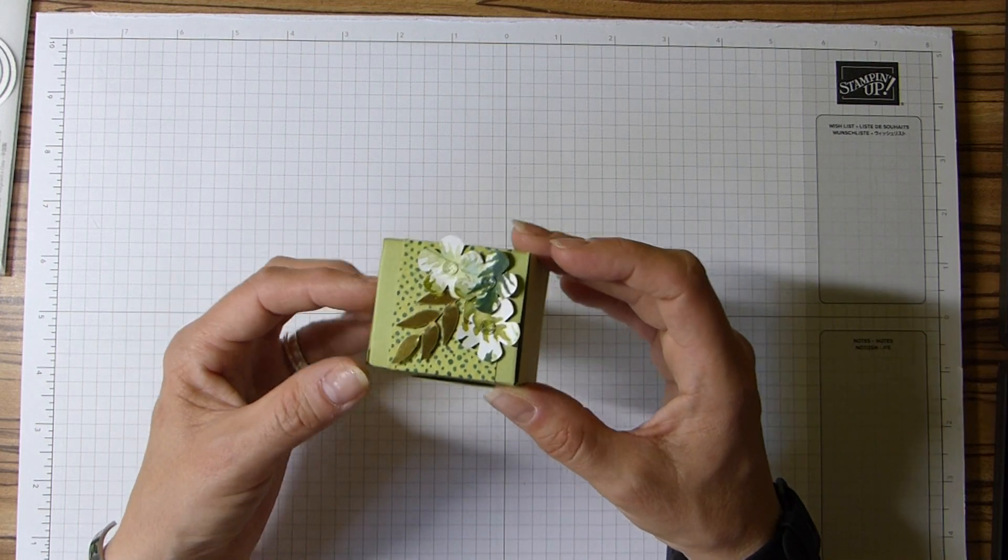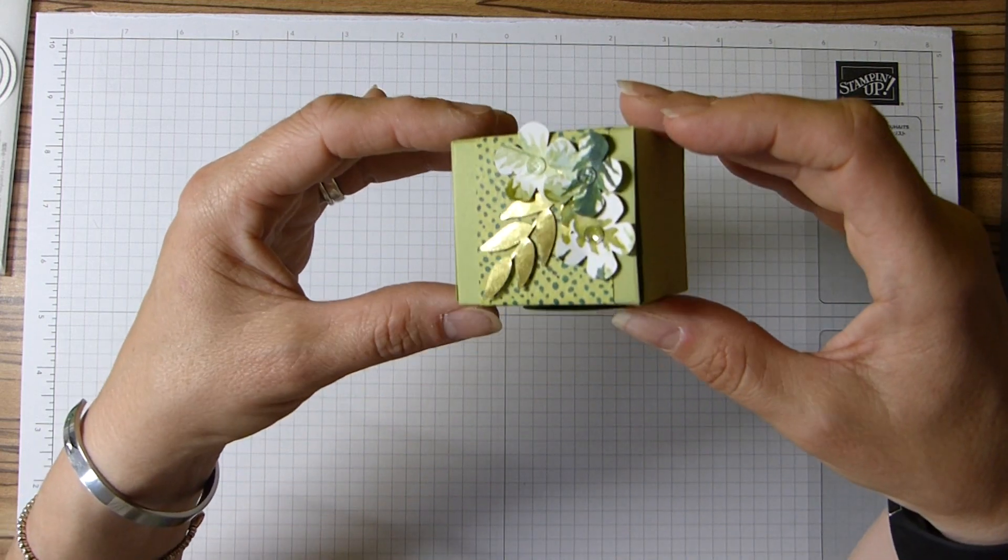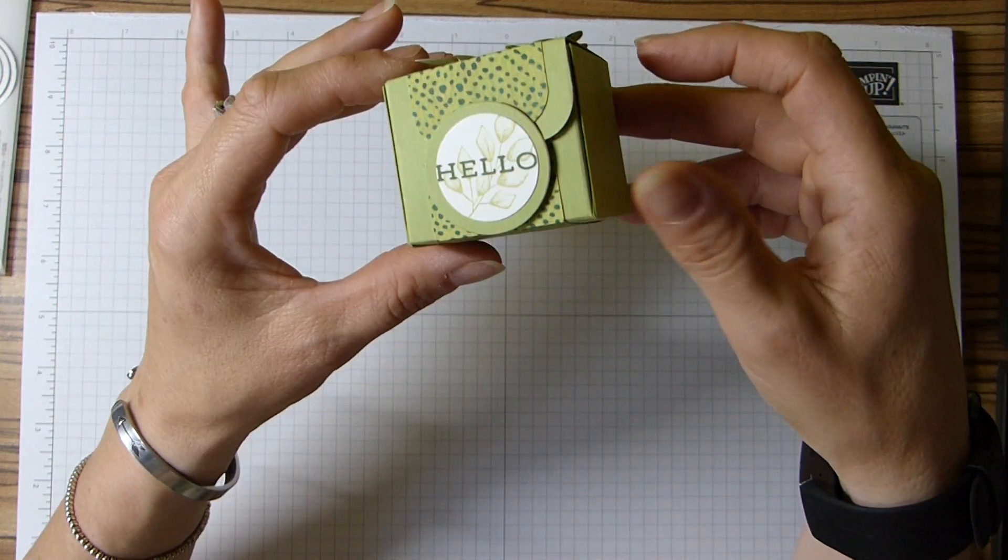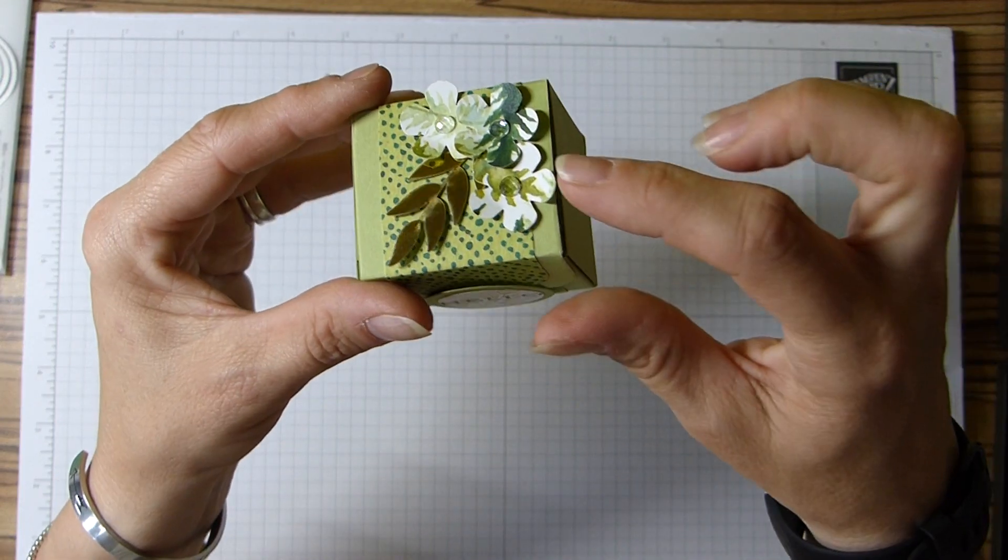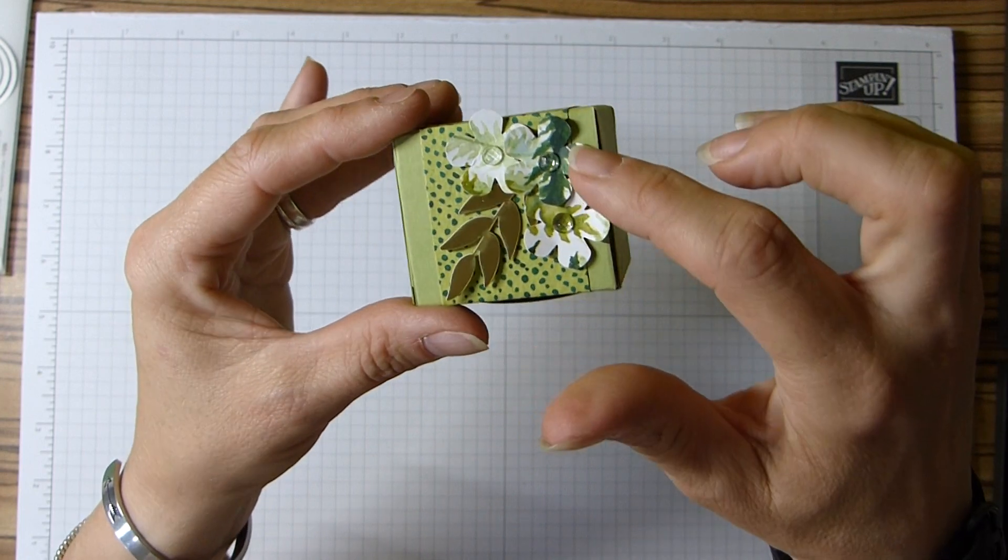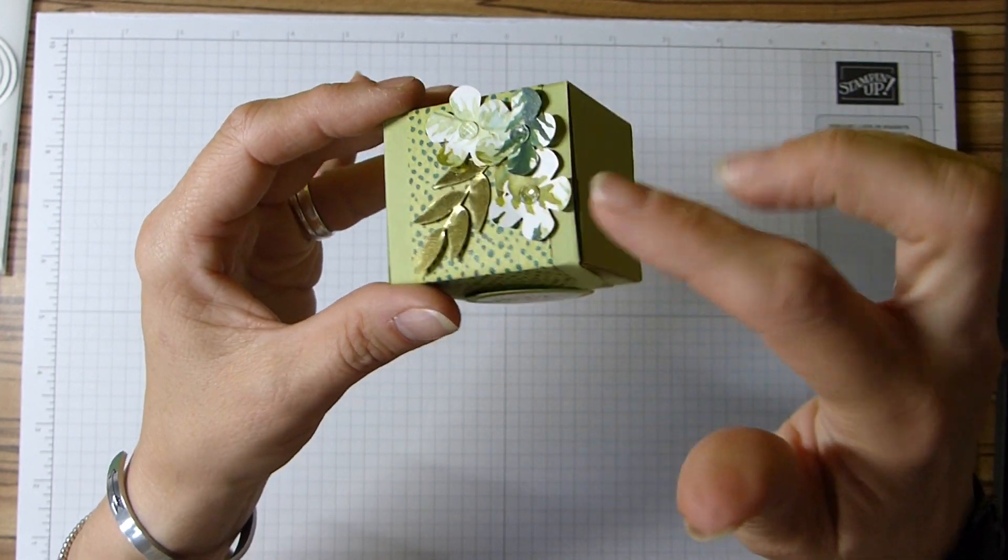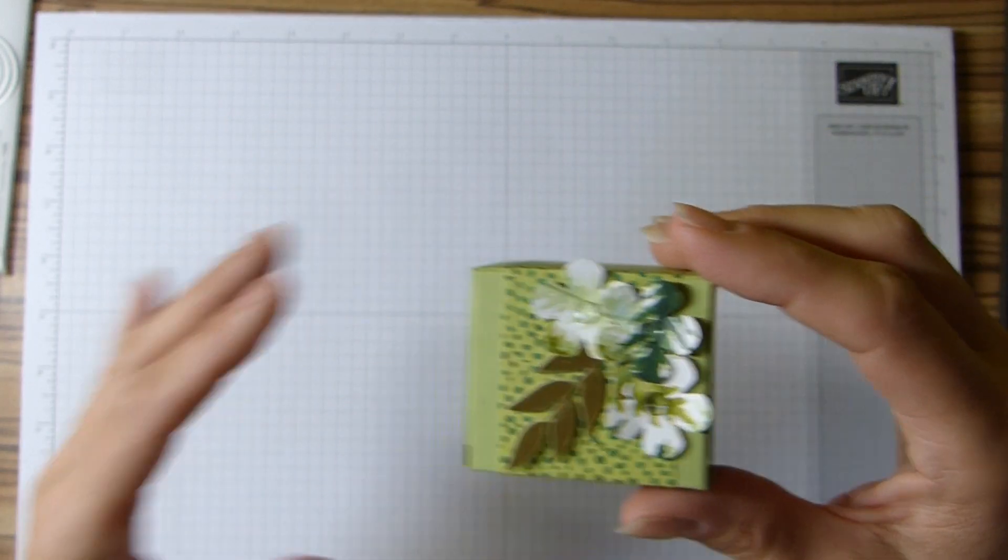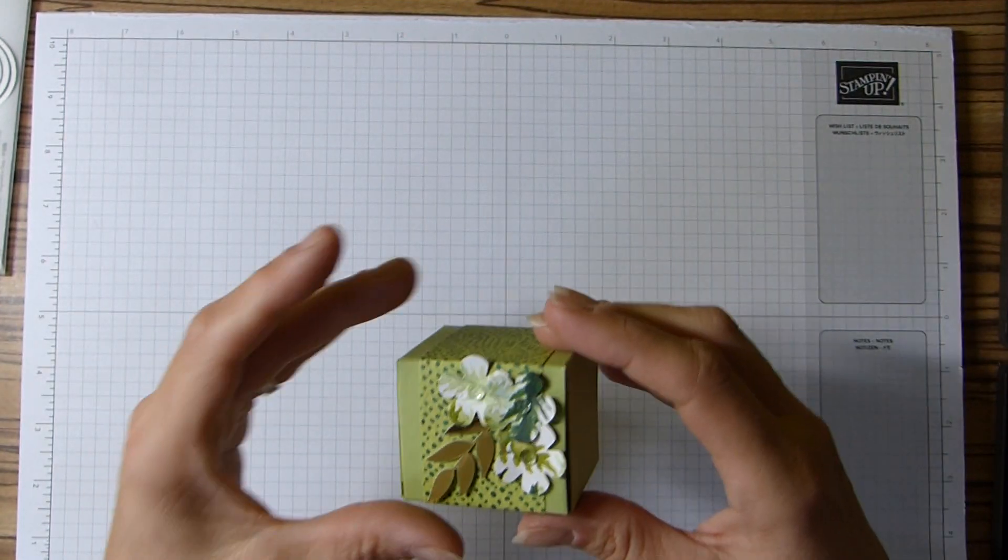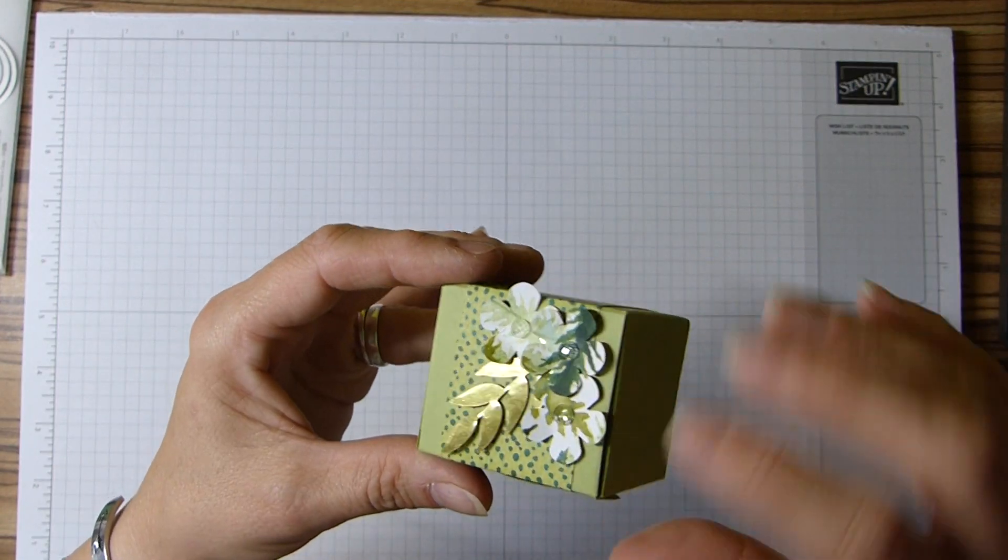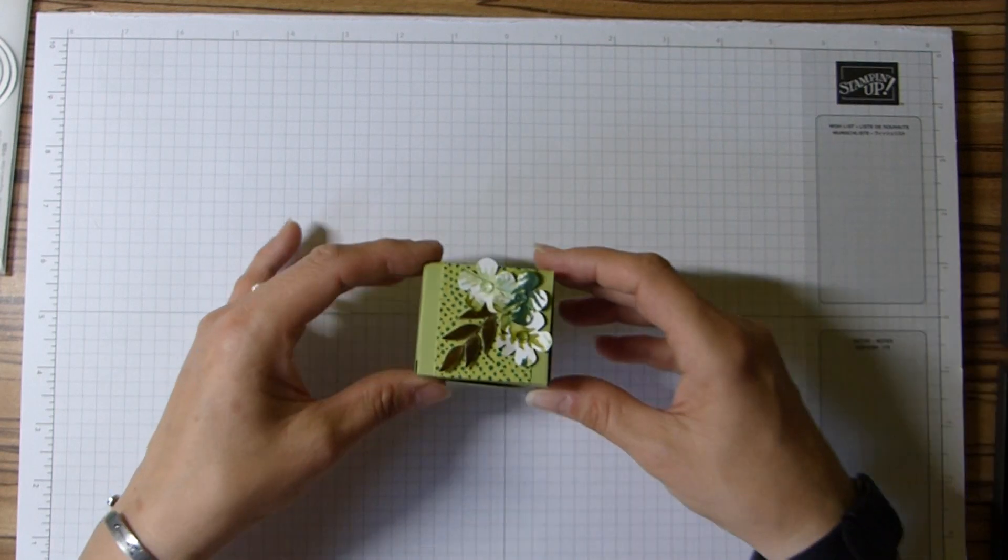I've obviously used the forever greenery suite here. Isn't it just divine? A little bit of gold on the top there. I have actually pinched those little glittery clear embellishments on the top - those are the elegant faceted gems from the peony garden suite, but they just fit so well on here that I thought I had to use them.